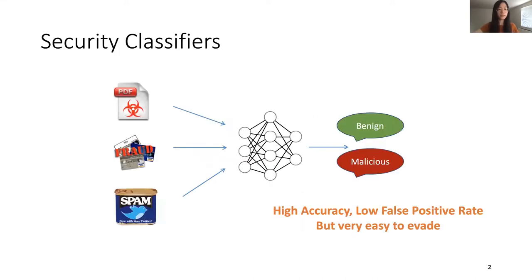Security classifiers are used to detect malware, online fraud, Twitter spam, and all sorts of malicious activities. We can train these classifiers with almost perfect accuracy and extremely low false positive rates. However, they are very easy to evade.